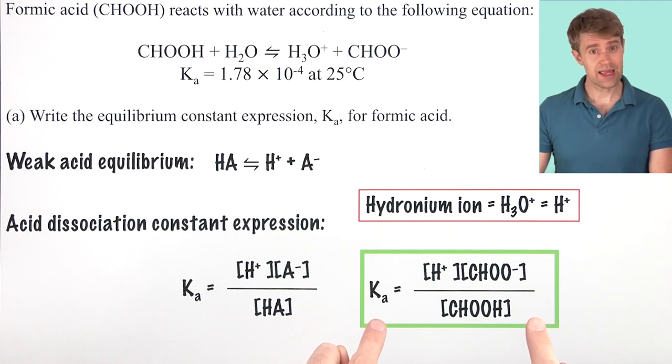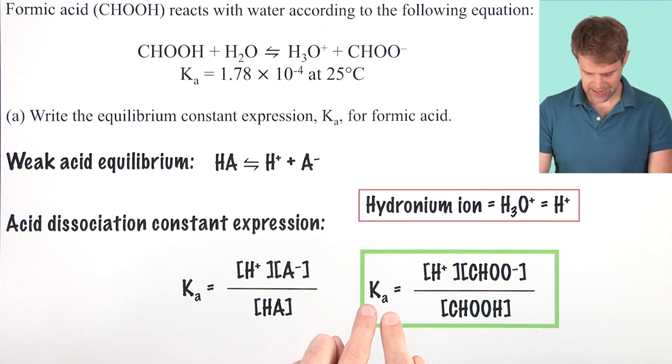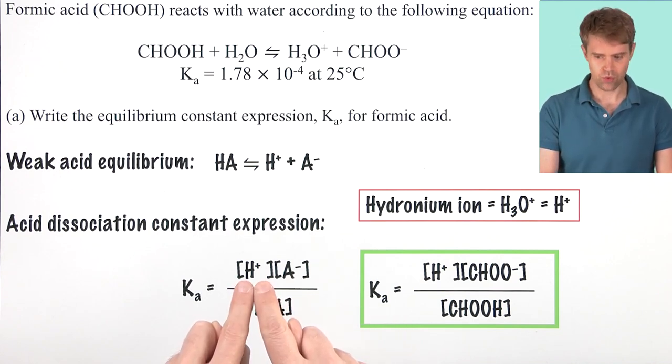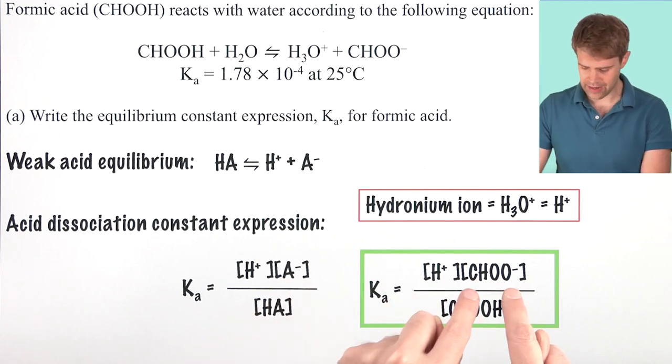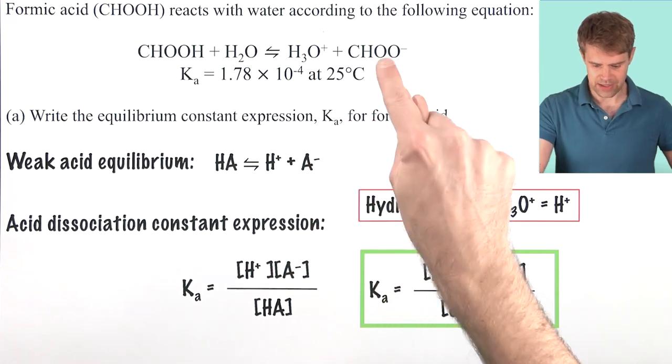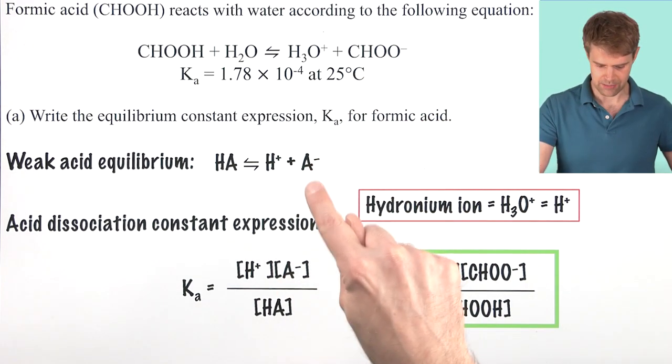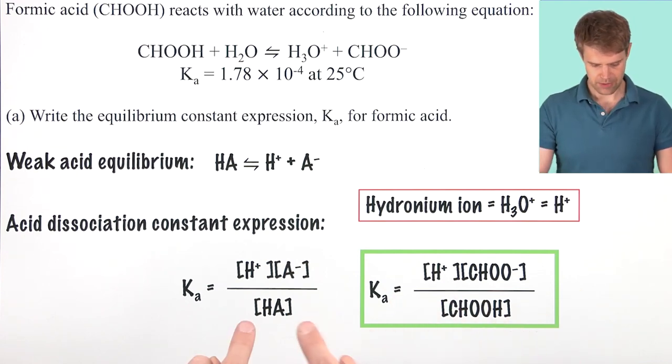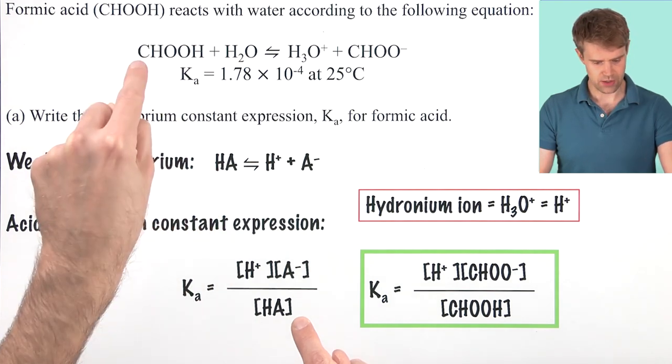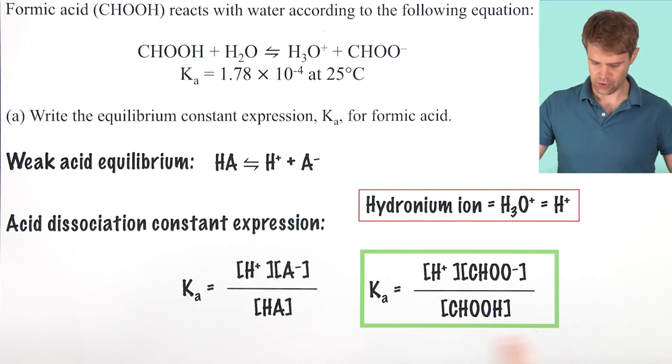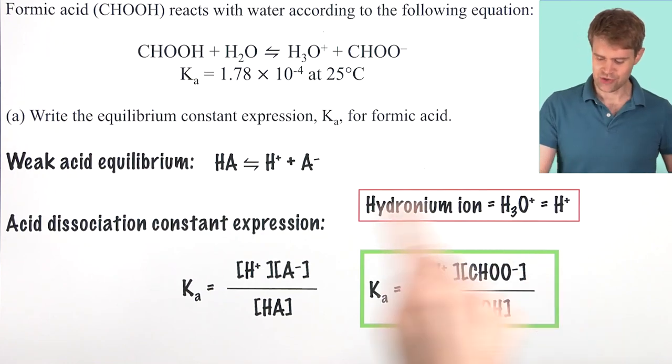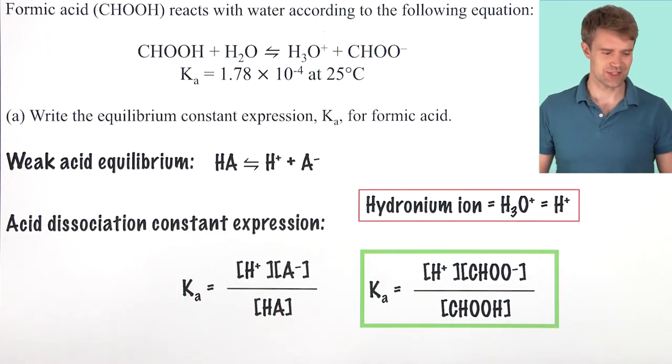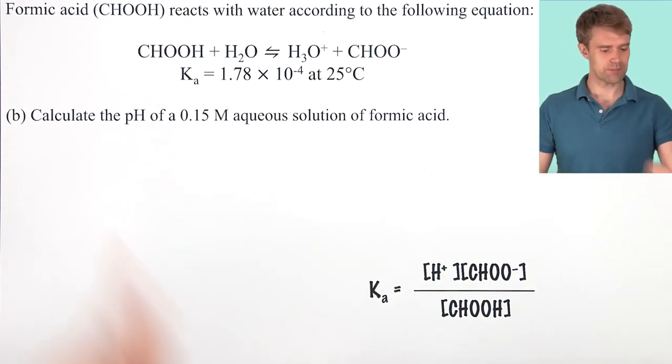So here is our Ka expression for formic acid. Our Ka equals the concentration of hydronium, or H+, times the concentration of the formate ion. The formate ion here is what is A-, right here. So that's formate, A-, and then finally, this is divided by the concentration of formic acid, which is our HA. This is our acid dissociation constant expression. And you know that we're probably going to be using this to do some more calculations down the road. We're going to keep it here for just that reason, and we'll move on to part B.